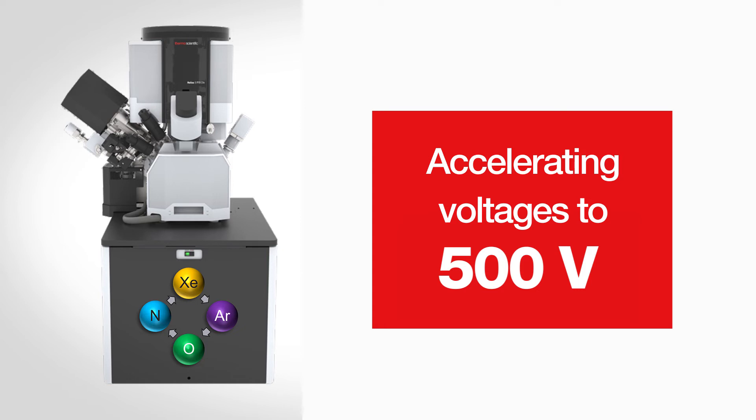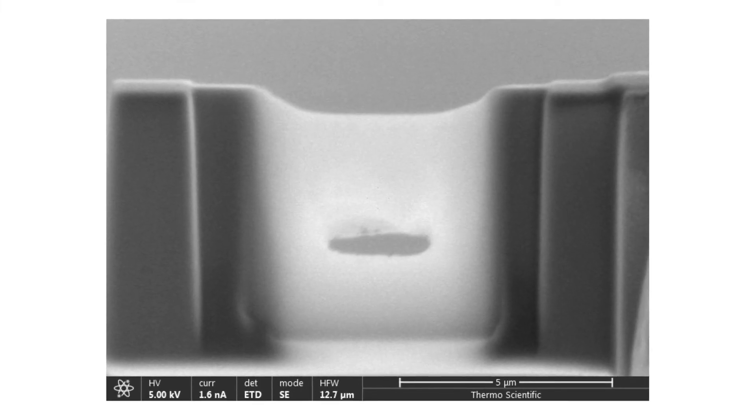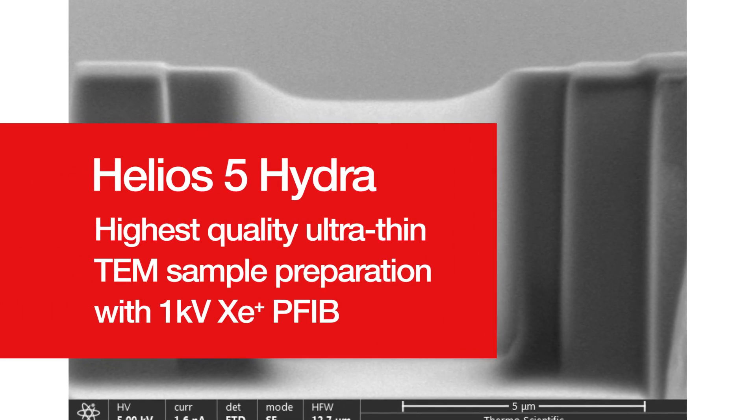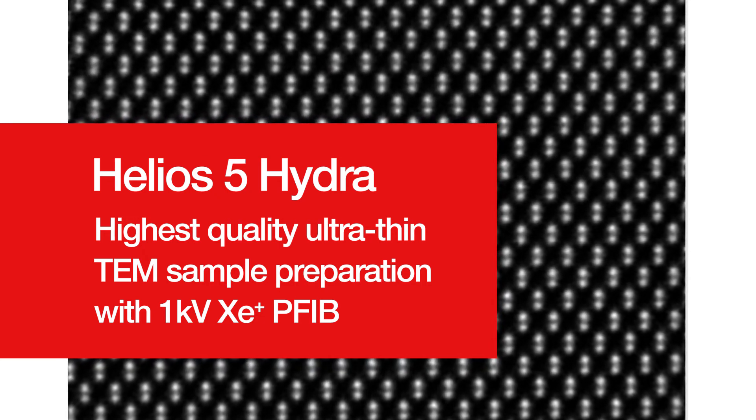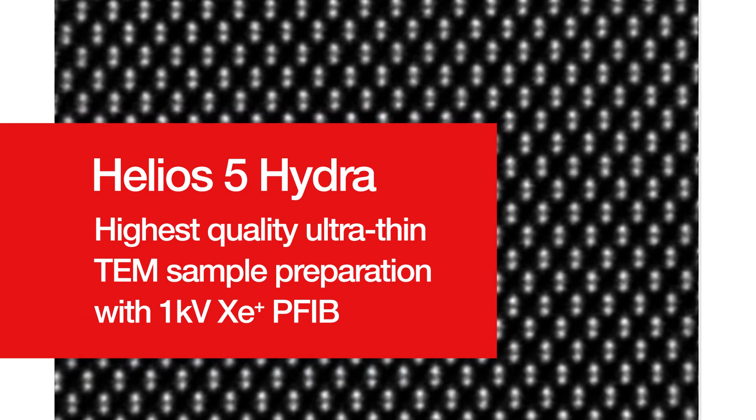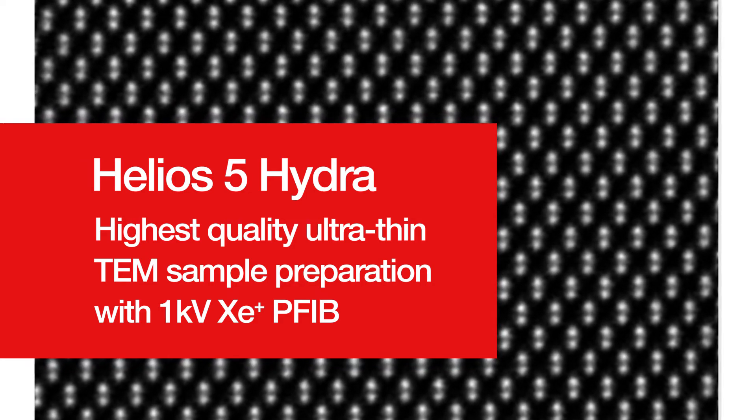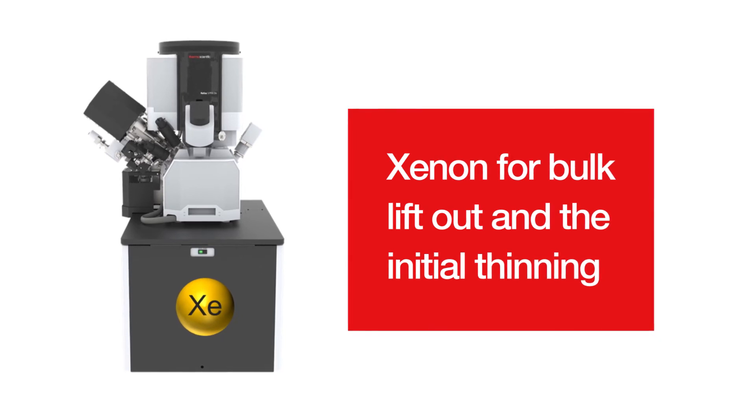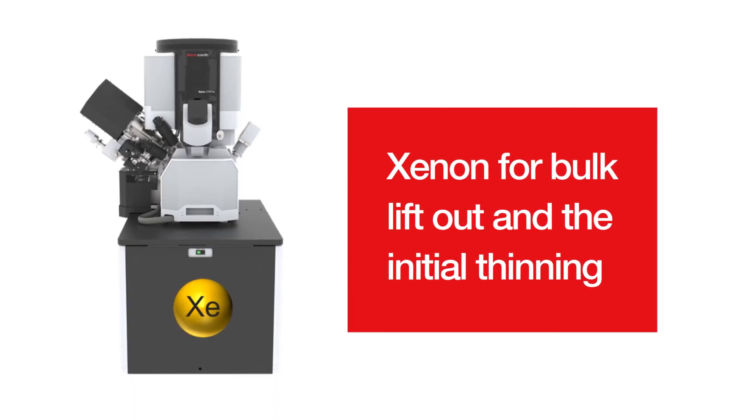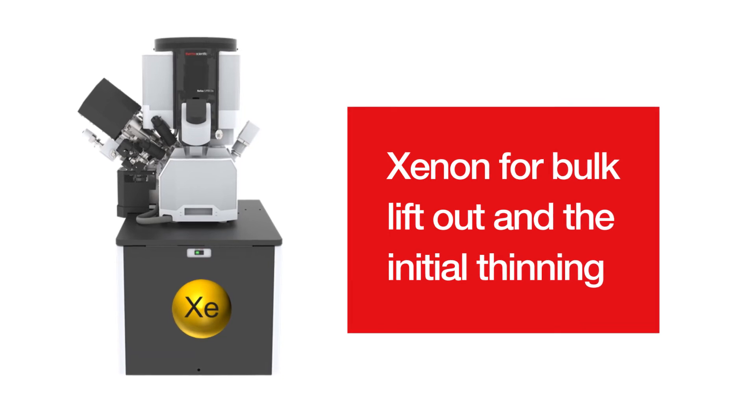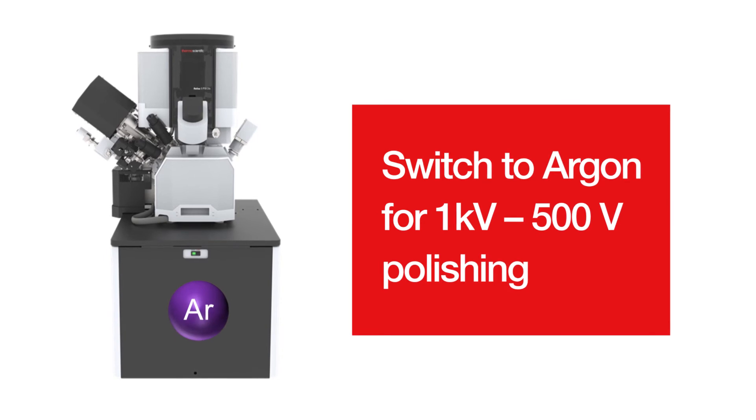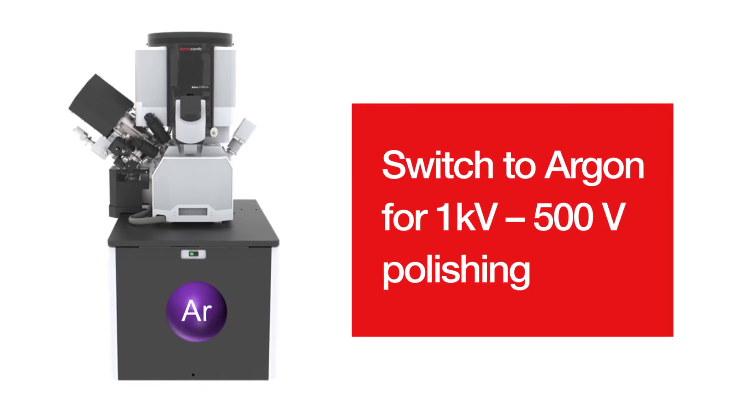And what that really meant for users is that they could really achieve near no-damage sample preparation by employing recipes of using a plasma-focused ion beam of xenon for the bulk lift-out and initial thinning steps. And then in the final thinning steps, where you're using low voltage to get a very transparent specimen with near no damage, you could then automatically switch to argon and use 1kV or 500-volt polishing to finish that sample off, all the while being able to image your sample preparation process with the SEM in the Hydra.